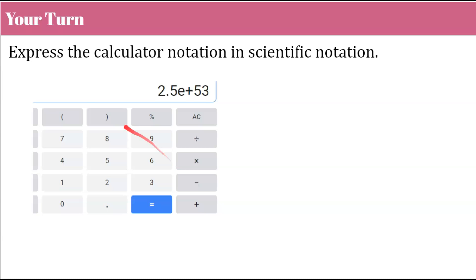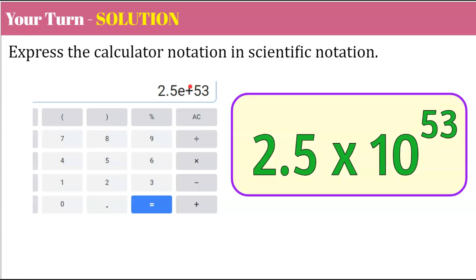Now it's your turn. Express the calculator notation in scientific notation. Go ahead and pause the video, do your best work, and then come back. Welcome back — let's review the solution. On this device, we have 2.5E+53. That meant positive 53. Sometimes if it's positive it won't restate the obvious, but you may see E positive 53. So we have a factor of 2.5, base 10, and our exponent is positive 53. This is the scientific notation for that E notation.